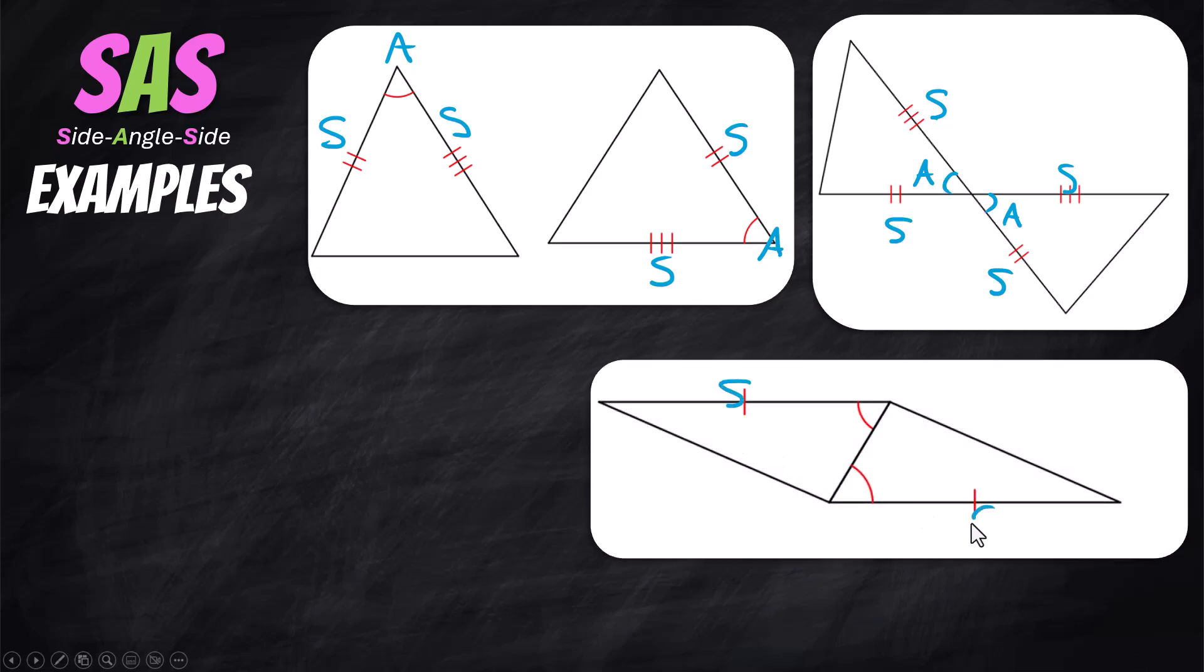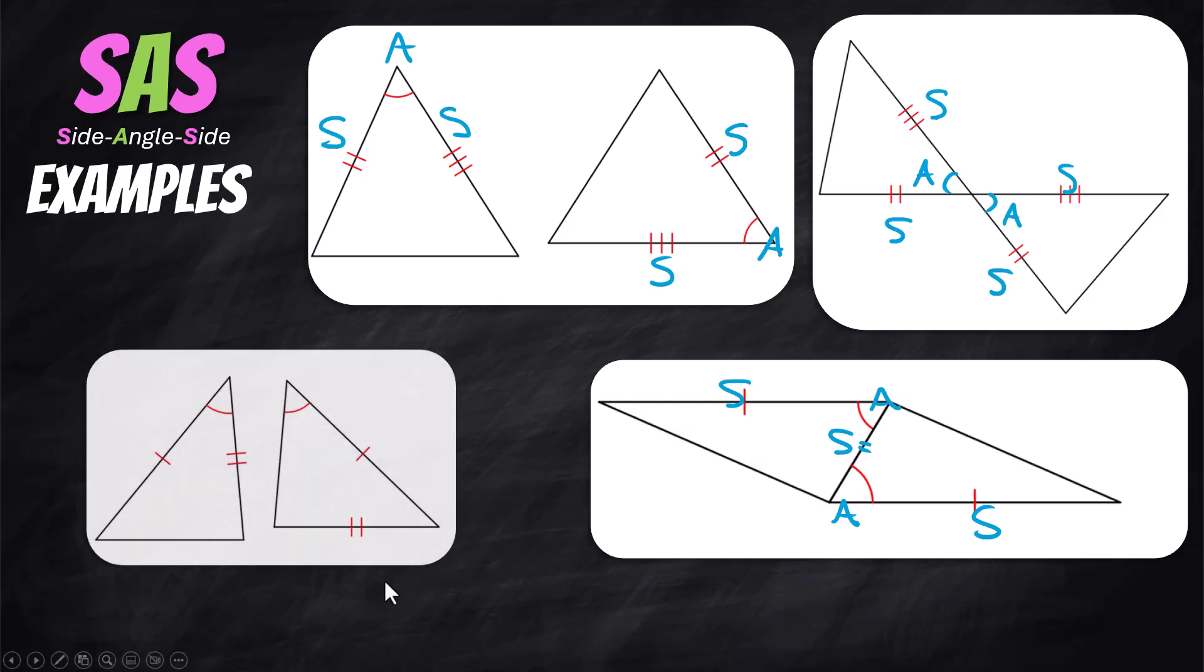We have one pair of congruent sides. We have been told that these two angles are congruent. Fabulous. And then you have that third side congruent to itself in the middle. That's the reflexive property again. You do not need to be told that that's congruent to itself. That's a definition.